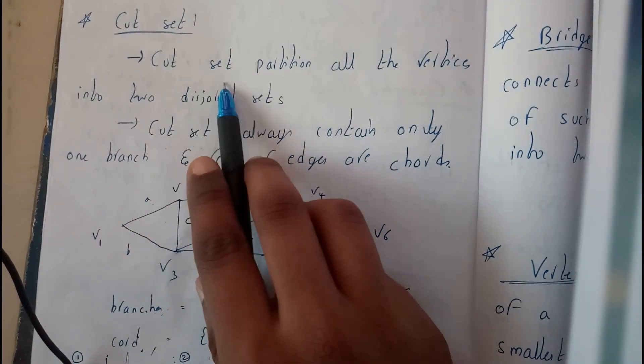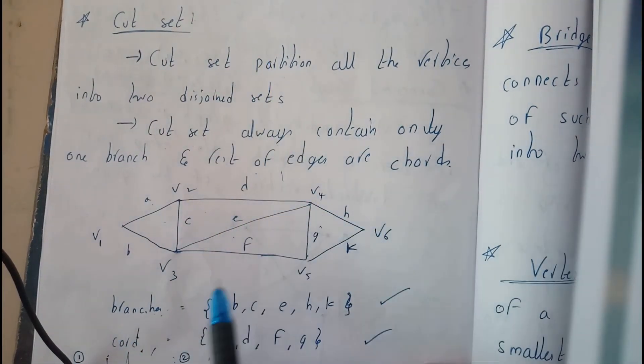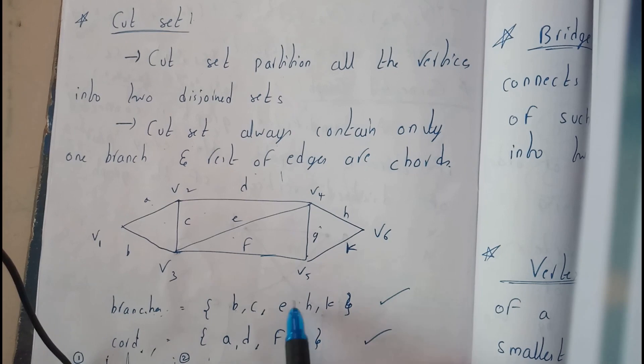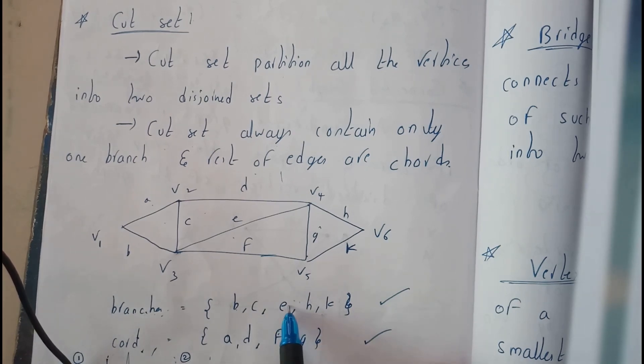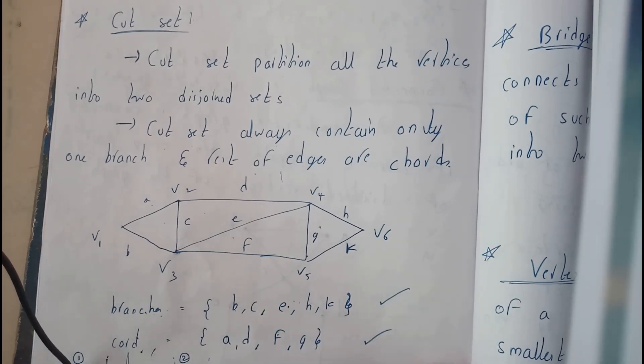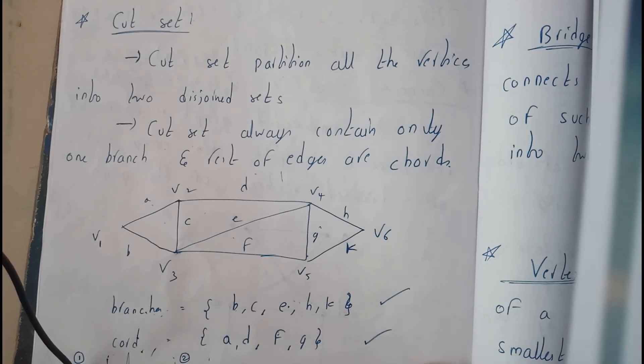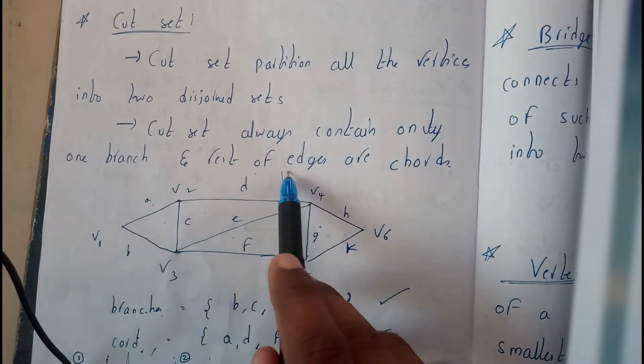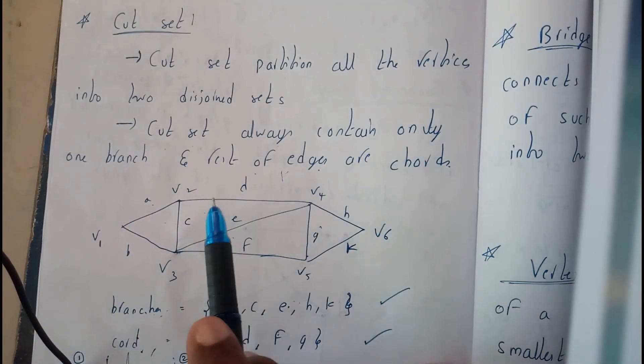Let us go to the definition once again: a cut set is the partition of all the edges into two different sets, such that each cut set individually has a single branch and any number of chords.